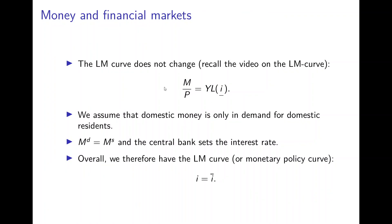The second curve we need is the LM curve, which does not change compared to the closed economy. Money demand is a negative function of the interest rate, and the central bank sets the interest rate. We assume domestic money is only demanded by domestic residents. The central bank sets the interest rate to keep money supply equal to money demand, so the LM curve, or monetary policy curve, is a horizontal line at the central bank's interest rate target, I-bar.